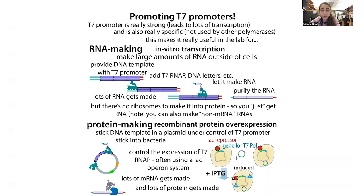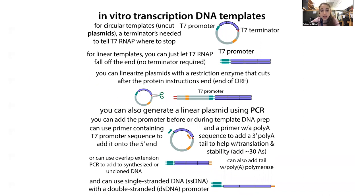Now we can take advantage of this — doing in vitro transcription and making protein inside cells. For in vitro transcription, you take a DNA template and give it T7 RNA polymerase. You need the T7 promoter in front of whatever sequence you want it to make RNA from. You can use a circular template like a plasmid — which you can host in bacteria and make lots of copies — cloned using restriction enzymes or PCR-based methods like SLIC. If the template is uncut circular, you need a terminator to tell the RNA polymerase where to stop.